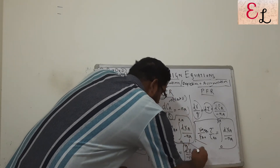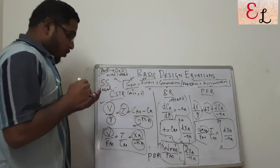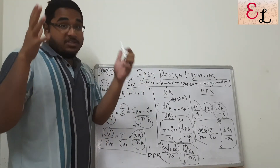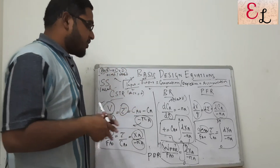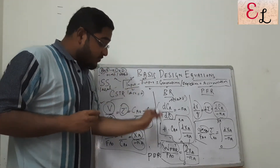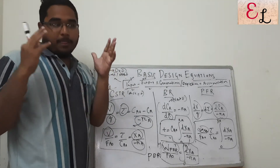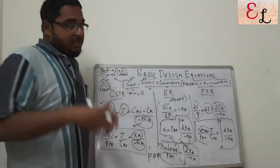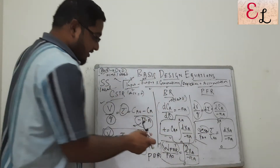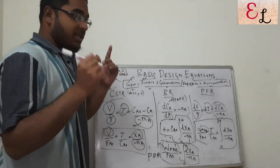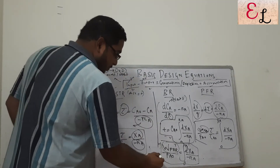In the packed bed reactor design equation, WPBR — weight of the catalyst in the packed bed reactor — divided by the mass flow rate of A into the chamber equals the integral from 0 to XA of dXA divided by minus rA. This is different from the volumetric flow rate used in CSTR and PFR. This is the final and very important design equation for a packed bed reactor.